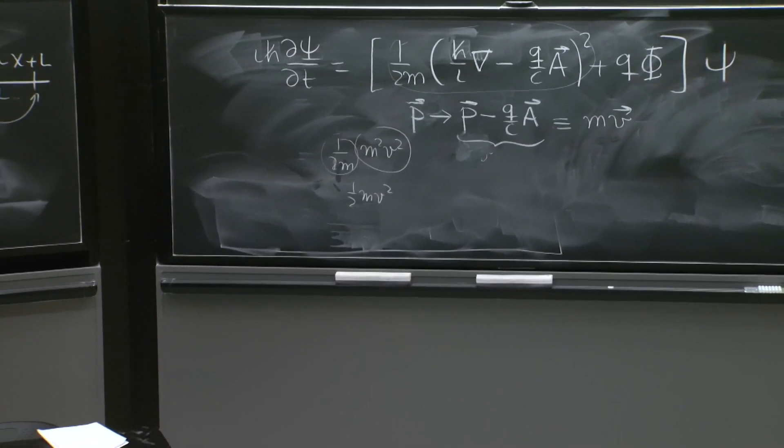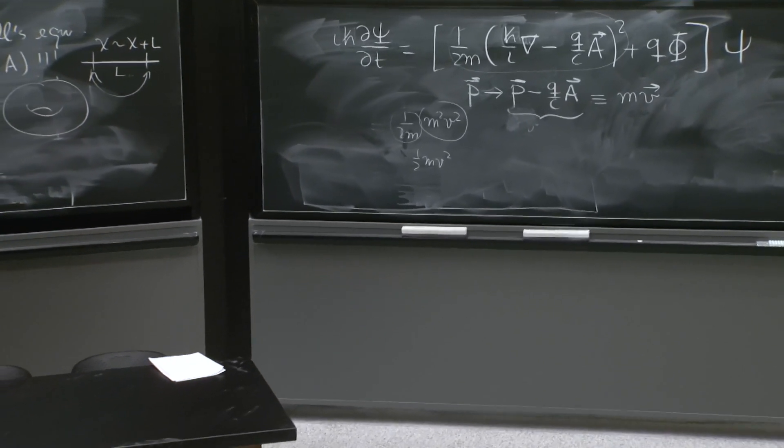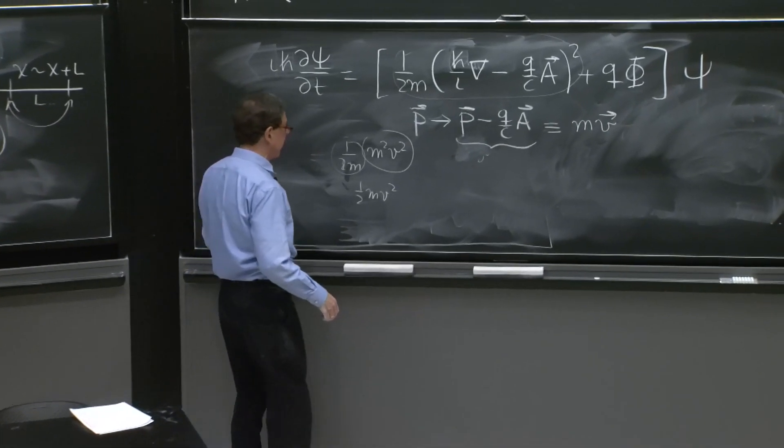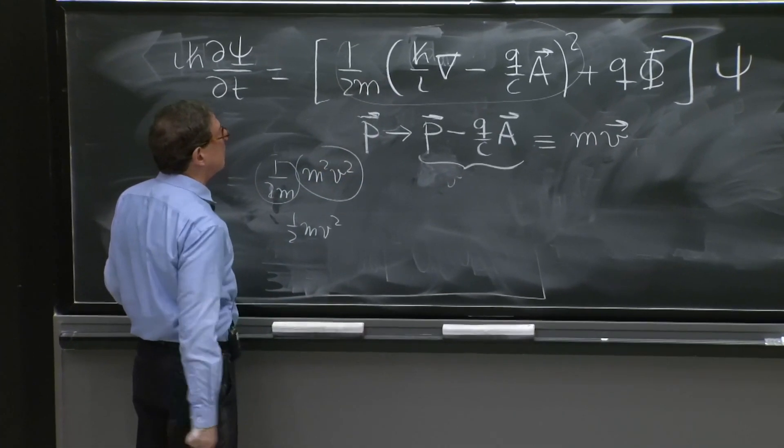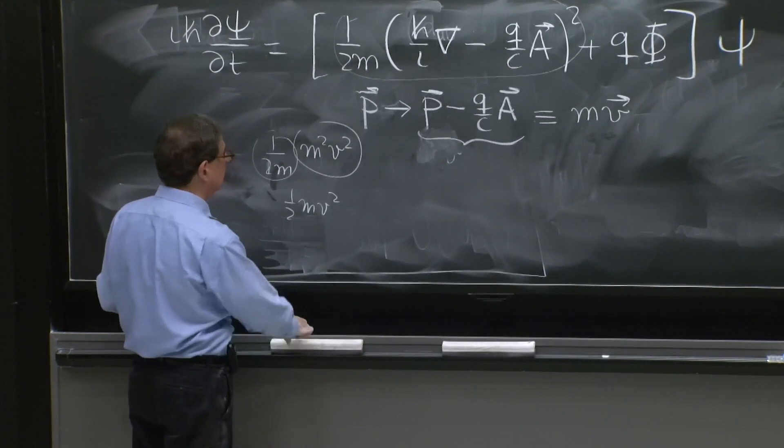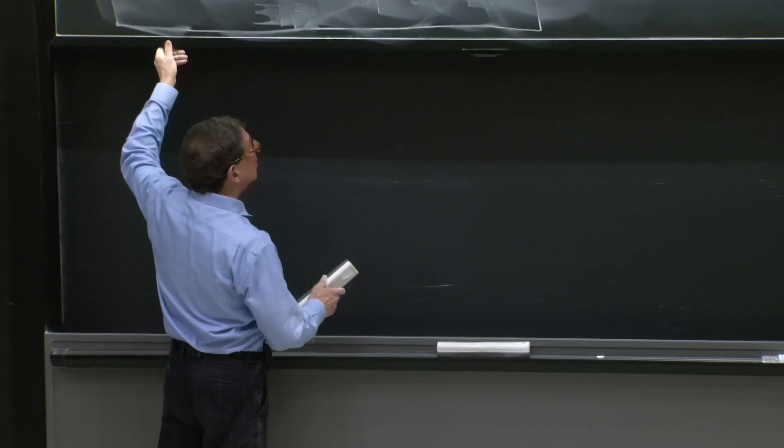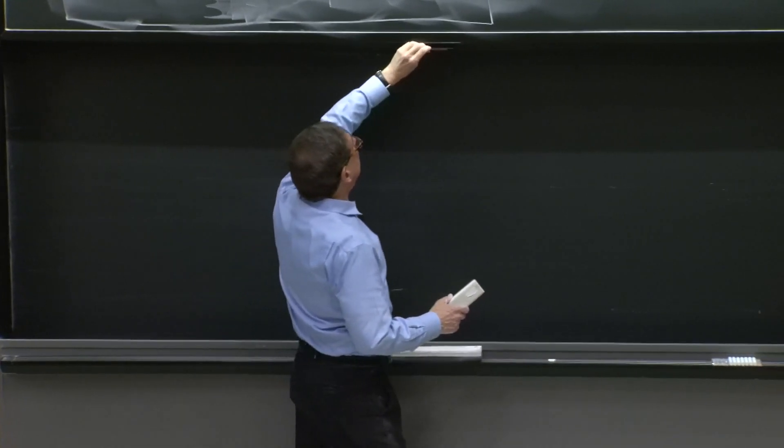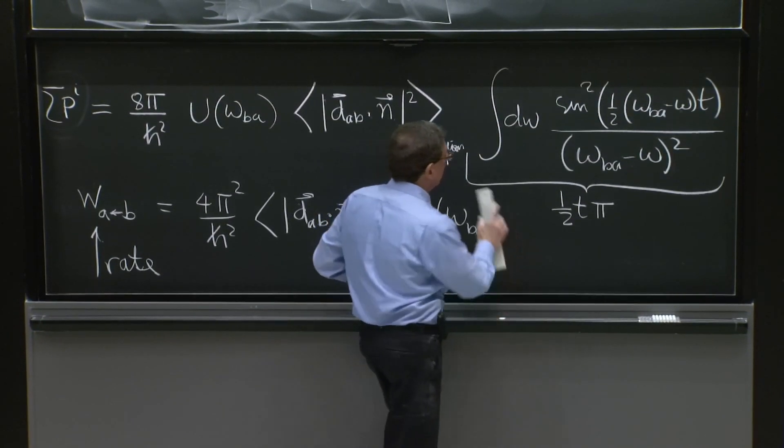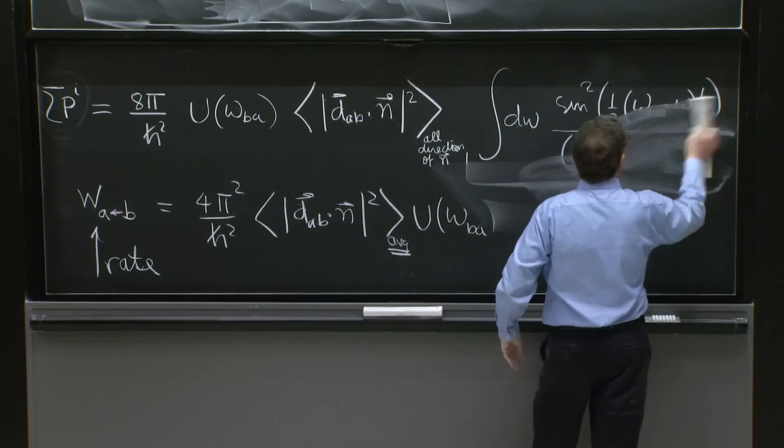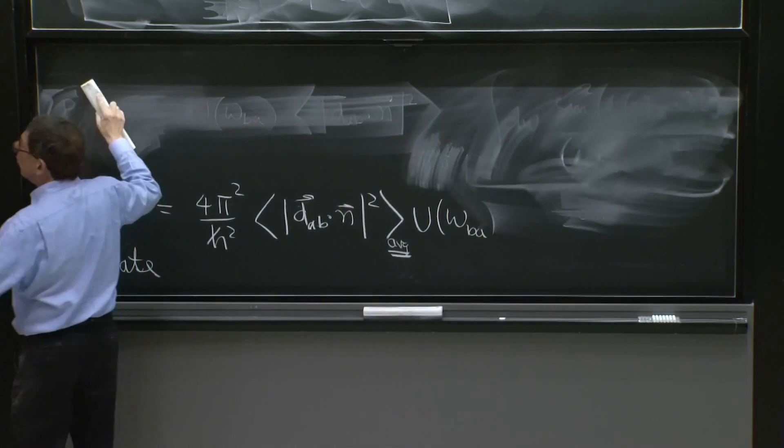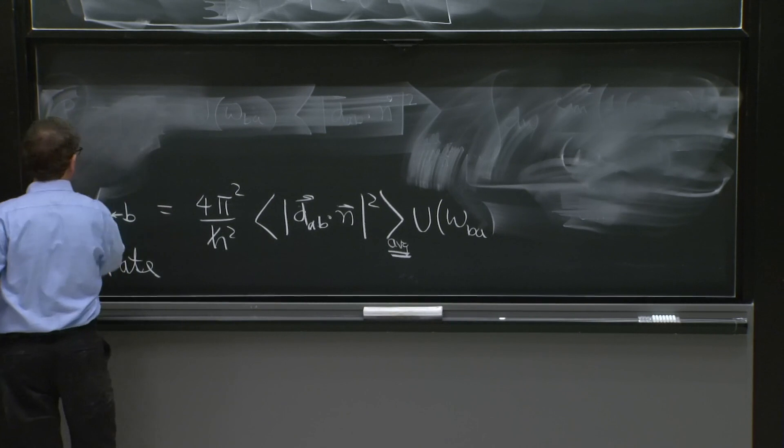So we've emphasized gauge invariance. So perhaps the most important thing we could say now to end up this lecture is, what is the statement of gauge invariance for this Schrödinger equation? Gauge invariance means that the physics that you obtain with one set of potentials should be the same as the physics you obtain with a gauge equivalent set of potentials.